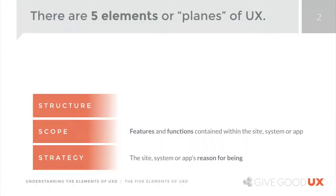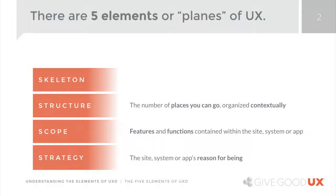Next up is structure, which is essentially the number of places you can go, organized in context of use — what is the person there to achieve, what are they trying to do, what are the possible paths they could take, and how many options do we need to provide? Moving up another level, we have the skeleton plane. On the skeleton plane, you have an optimized organization and arrangement of all the elements on the screen: navigation elements, content, control elements, buttons, and menu options. The skeleton plane is about figuring out how all those things work together, not only inside one screen but across an entire system, site, or app.